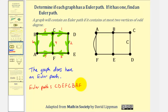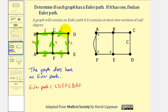Now let's look at our second example. We'll begin by determining the degree of each vertex. Here we have degree three, and here we have degree three. Since we can have at most two vertices of odd degree, and we've already found more than two, we can stop here and say the graph does not have an Euler path.